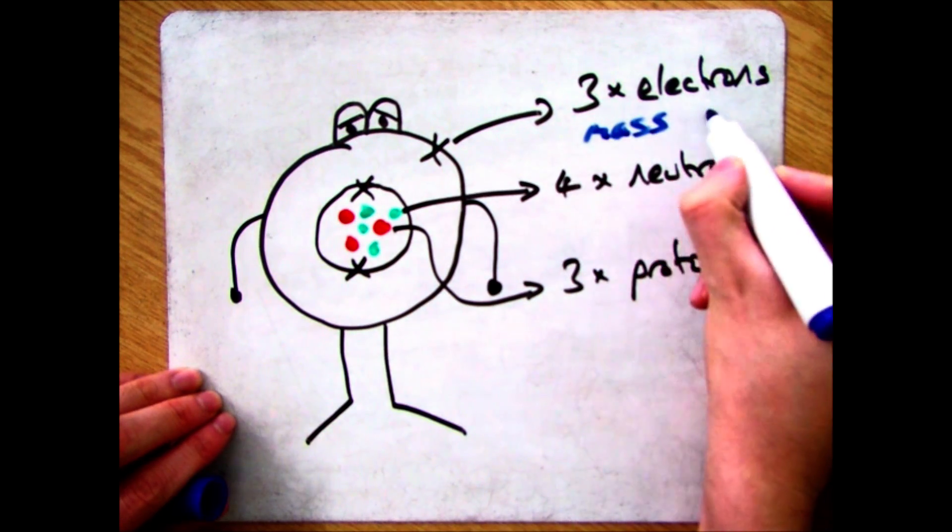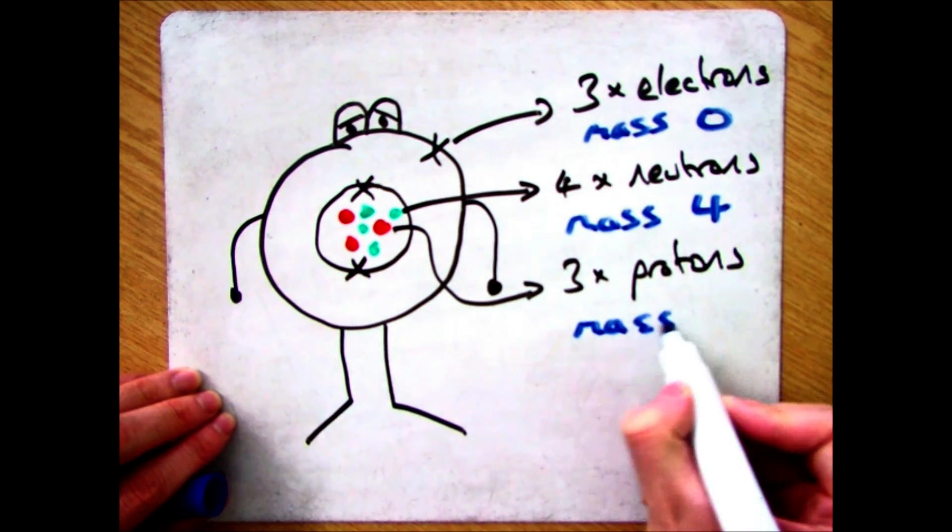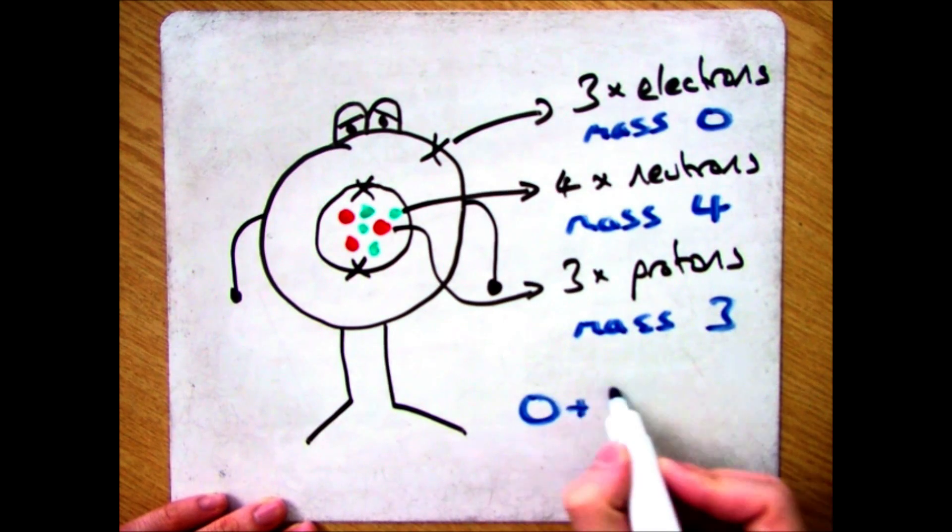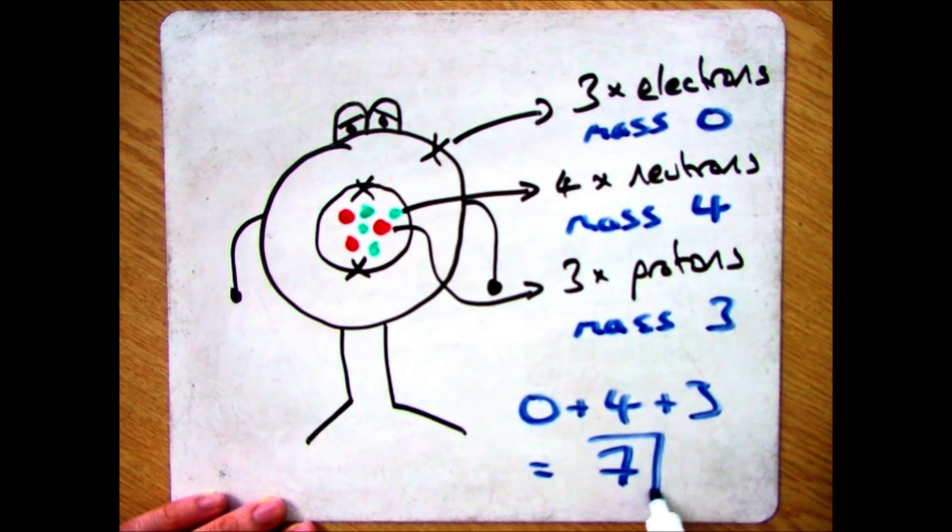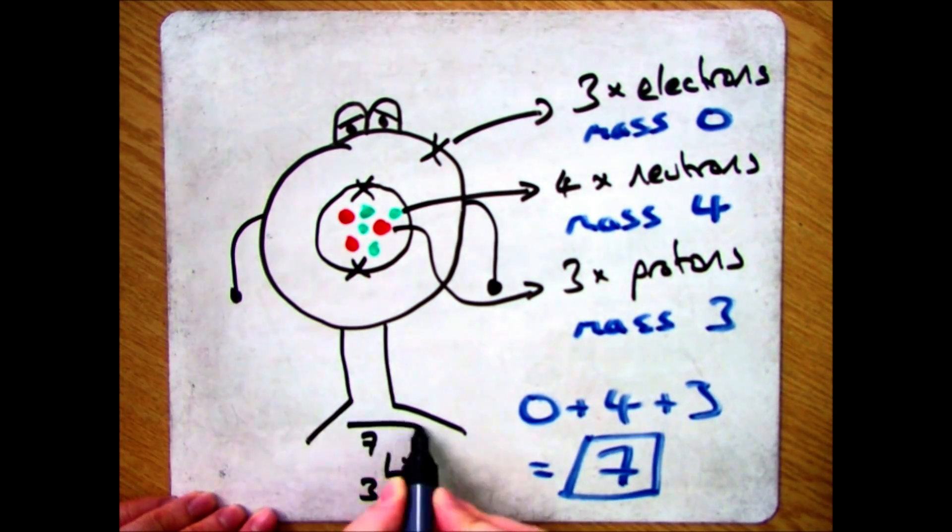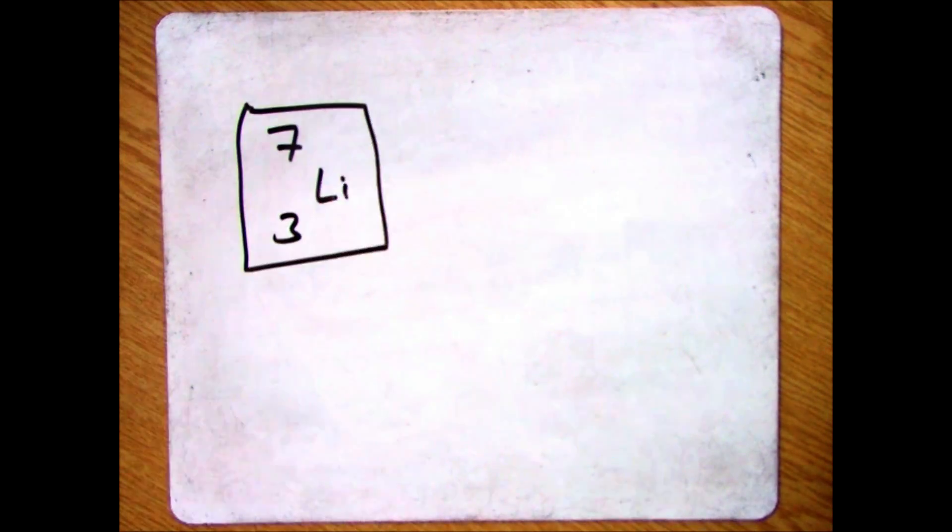Now you should also remember that electrons effectively have a mass of 0, and protons and neutrons both have a mass of 1. So if I've got 4 neutrons I have a mass of 4, if I have 3 protons I have a mass of 3, you add all that together it gives you 7 overall.